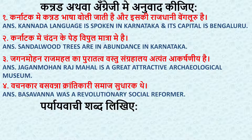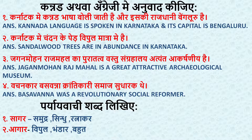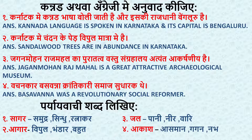Next section — Paryayvachi shabd likhiye, write synonyms. Sagar — ocean; synonyms are Samudra, Sindhu, Ratnakar. Agar — mine/abundance; synonyms are mini, vipul, bhandar, bahut, zyada. Jal — water; synonyms are pani, neer, vari. Akash — sky; synonyms are asman, gagan, nabh.